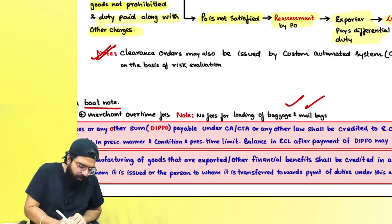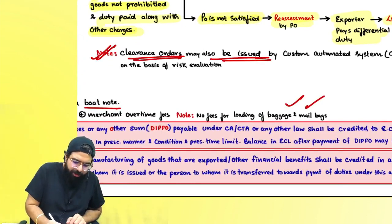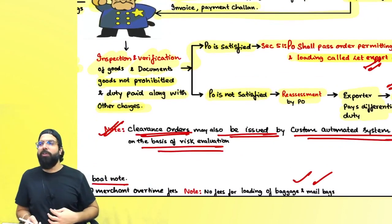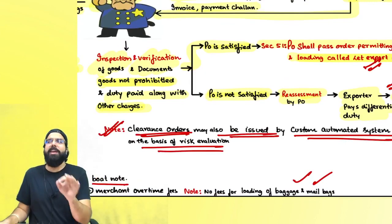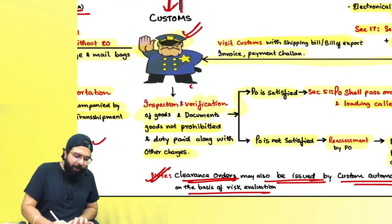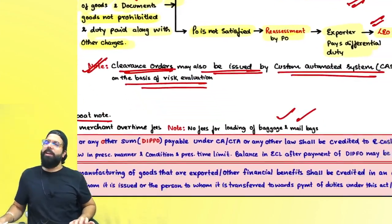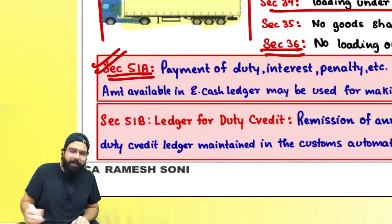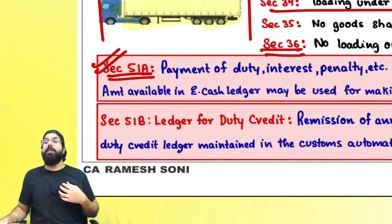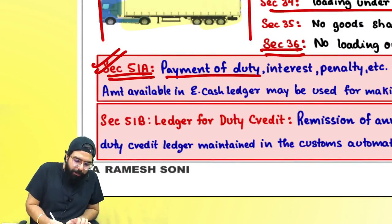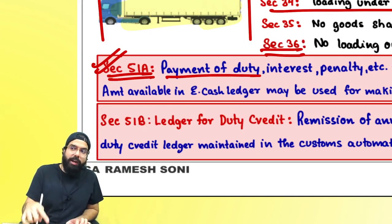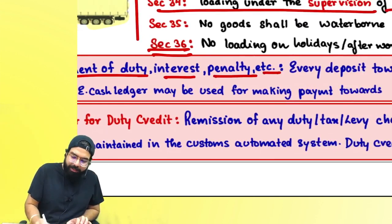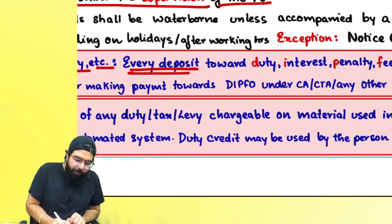One small point: the let export order may also be issued by the custom automated system automatically for compliant importers. Section 51A talks about the customs e-cash ledger: every deposit towards duty, interest, penalty, fees, or any other sum payable under the Customs Act, Customs Tariff Act, or any other law shall be credited to the e-cash ledger. The amount available can be used for making payments towards duty, interest, fees, penalty, or any other amount under the Customs Act or Customs Tariff Act.